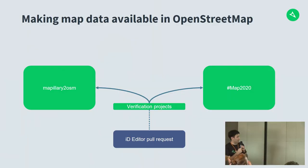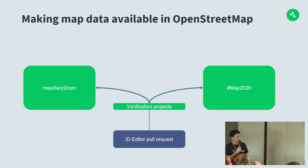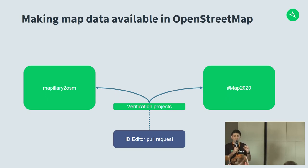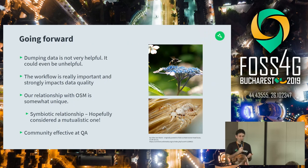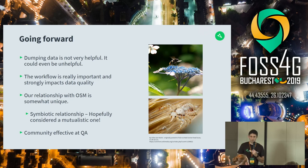Anyone can participate in verification projects and create their own. To give an overview: we have mapillary.osm, which was the first project; Map2020; we're using verification projects to improve data quality; and very soon we'll have the iD Editor pull request — which Chris and others have been working on — where map features will actually be a layer you can toggle in OpenStreetMap. Going forward, dumping data is not very helpful. If 50% of detections aren't accurate, is it really useful to dump them all on the community? Probably not.